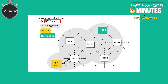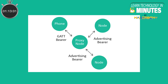The second is the GATT Bearer. This bearer utilizes the connection state of BLE devices. It allows non-mesh supporting devices to interact with the mesh network via GATT operations. This is accomplished via a special node called the proxy node.